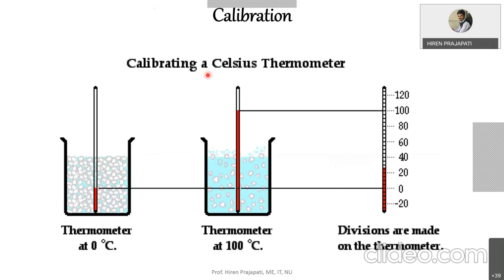For calibration, we dip the thermometer in an ice bath at 0°C, mark the expansion level as zero, then shift it to boiling water where mercury expands further to the 100°C mark. We divide the range 0 to 100 into 100 equal divisions, each giving 1 degree. This is how calibration of simple liquid-filled thermometers is done.